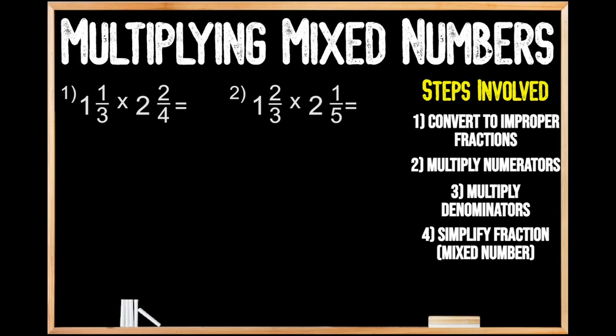Returning back to question number one, we need to convert these mixed numbers to improper fractions. To do this, first we're going to multiply the value of our denominator by the value of our whole number. For our first mixed number, we're going to multiply 3 times 1, which gives us 3, then we add on the value of our numerator. So 3 plus 1 gives us 4, for 4 thirds.